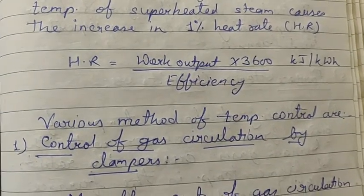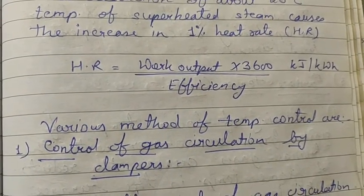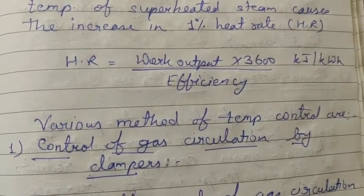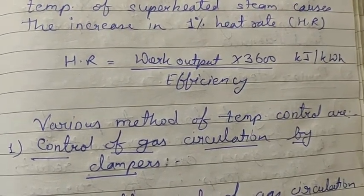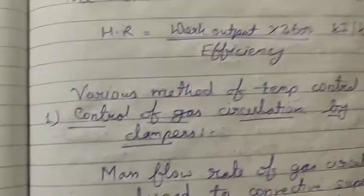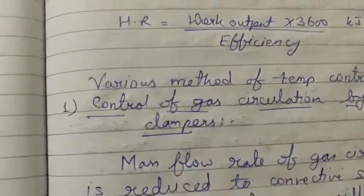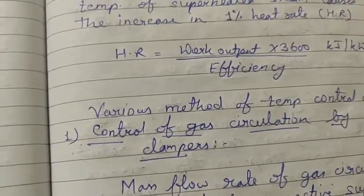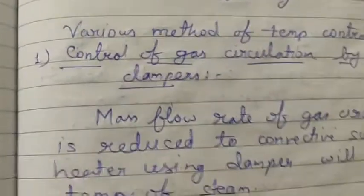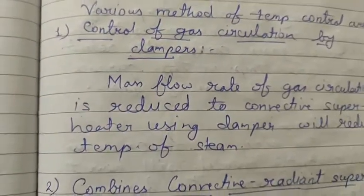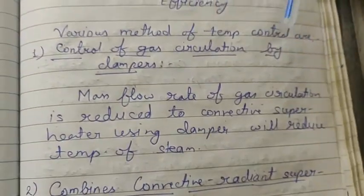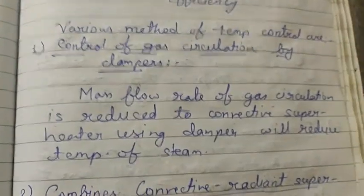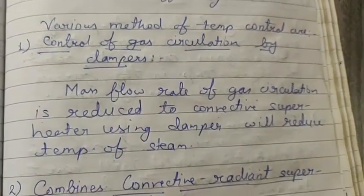Various methods of temperature control are used in the superheater. The first method is control of gas circulation by dampers. The mass flow rate of gas circulated is reduced to control superheat using a damper.